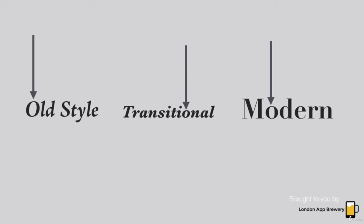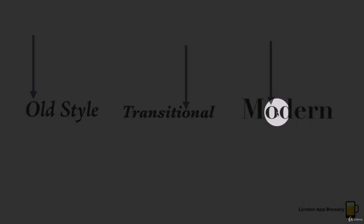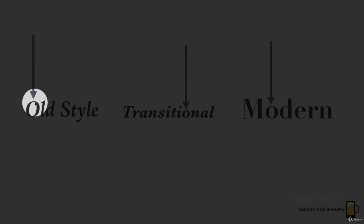If you concentrate on the O's, for example, comparing old style to modern, the difference in thickness between the thickest and thinnest parts is much larger in the modern style than in the old style.